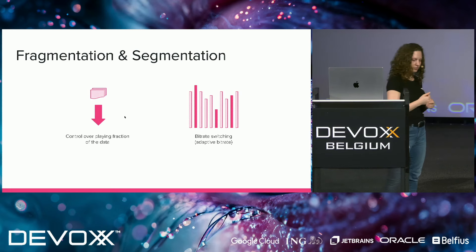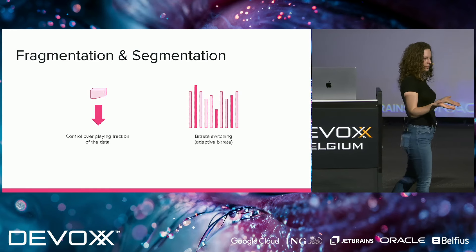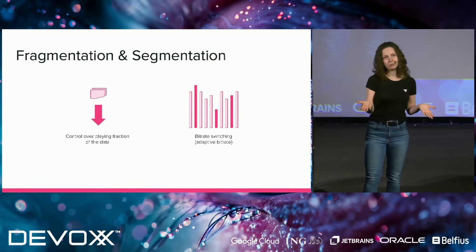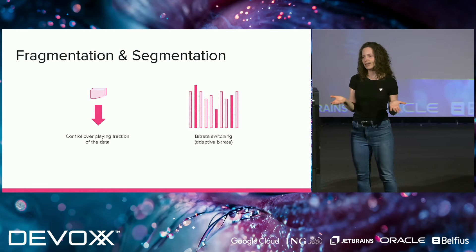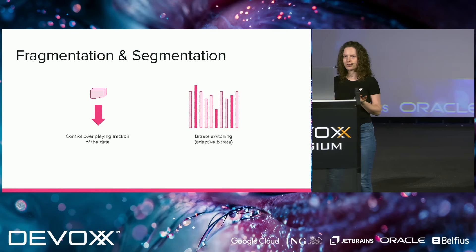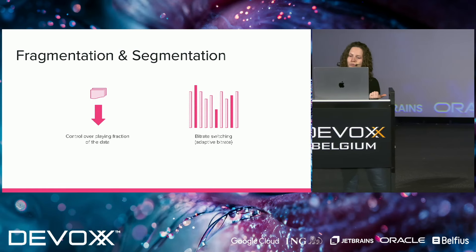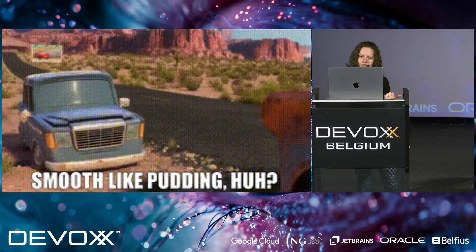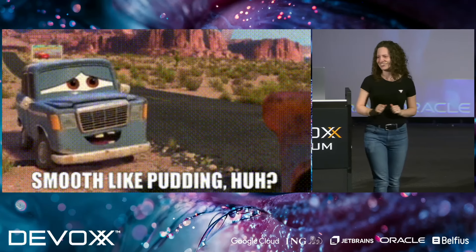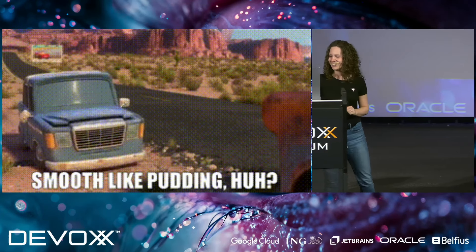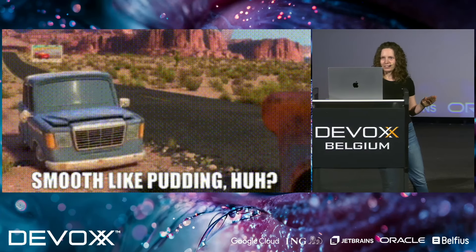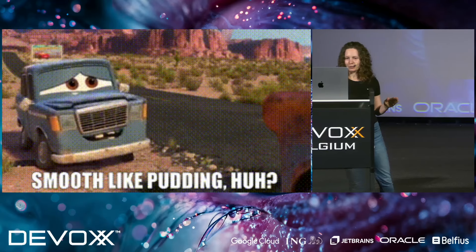At this point we support both criteria — we have control over playing fractional data and bitrate switching — so from now on, playback should be smooth and efficient. That was it for the theory.